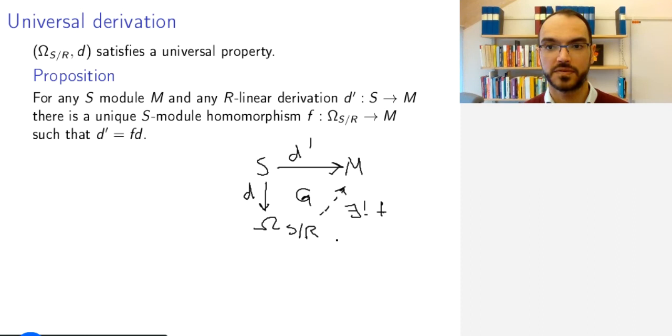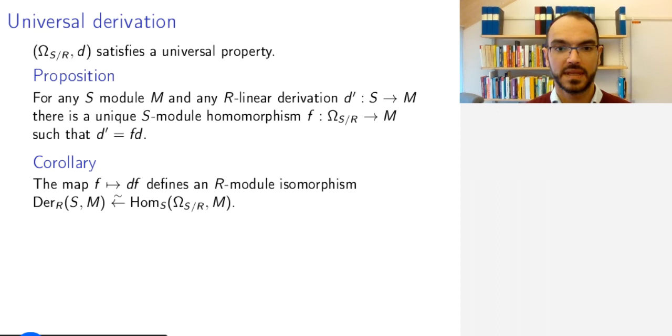As a corollary, it follows immediately from this universal property that derivations from S to M correspond to homomorphisms of S-modules from the module of Kähler differentials to M. So this is the universal module of derivations and D is the universal derivation.